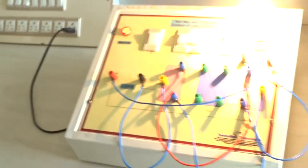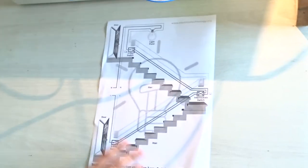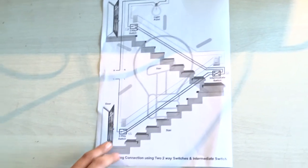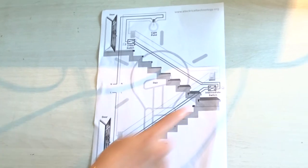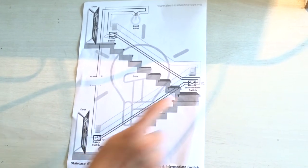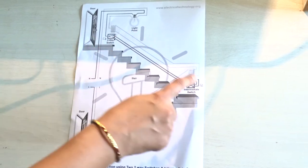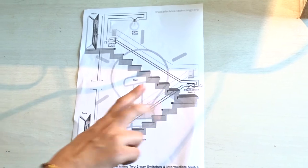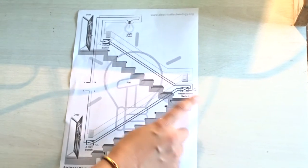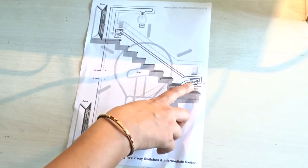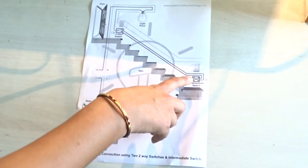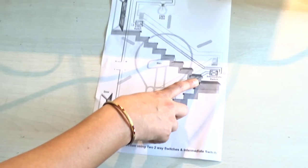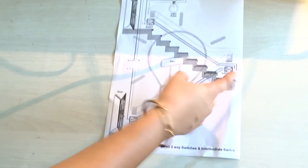Suppose it is a three-floor building and you want to control a single lamp using three switches with an intermediate switch. In this diagram, a single lamp can be controlled by three different switches: S1, S2, and S3, where S2 acts as the intermediate switch. There are two possibilities of connection — one is a direct (straight) connection and the other is a cross connection. In this particular diagram, a cross connection is already shown, but we can make either a straight or cross connection controlled by the intermediate switch.